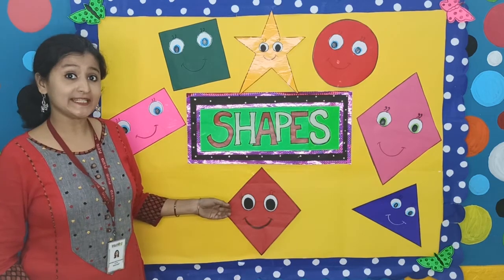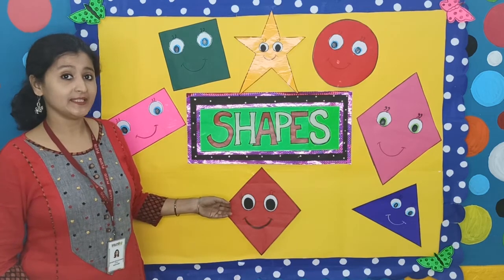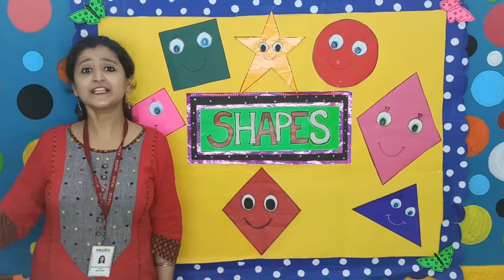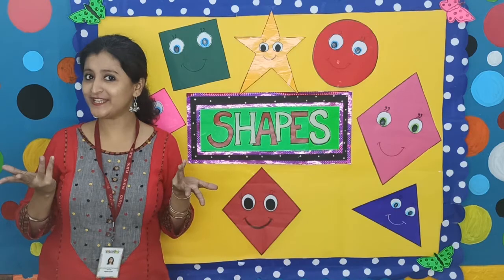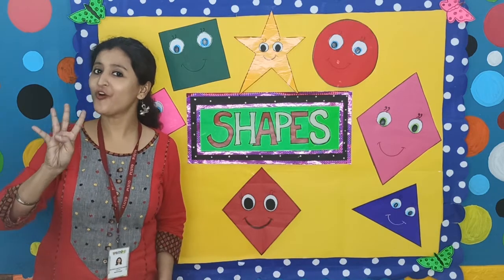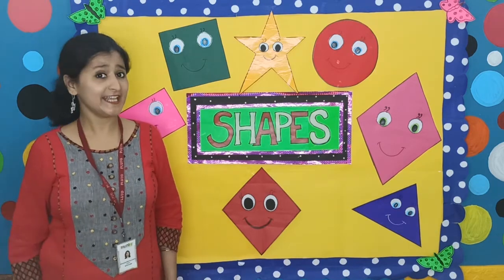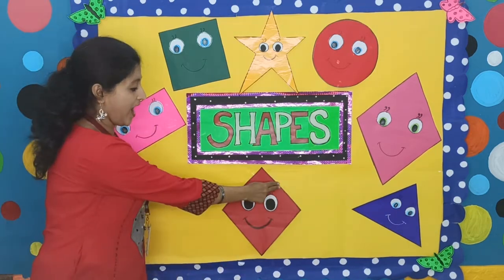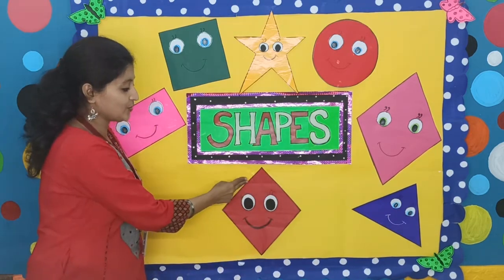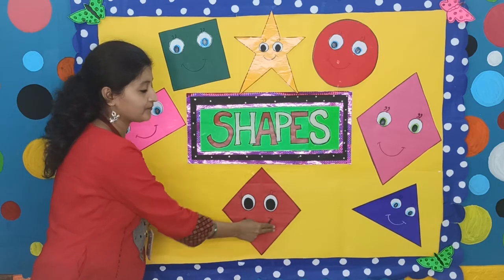Look at Daisy the Diamond. It has four sides. How many sides? Four sides. Let us count those sides: one, two, three, four.